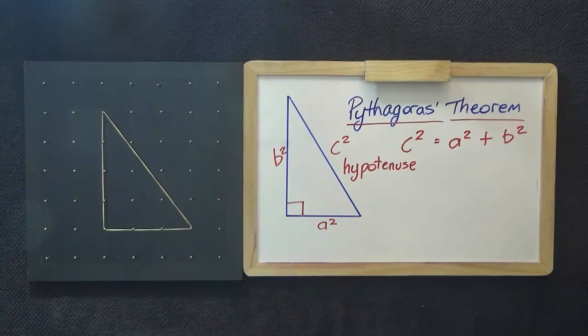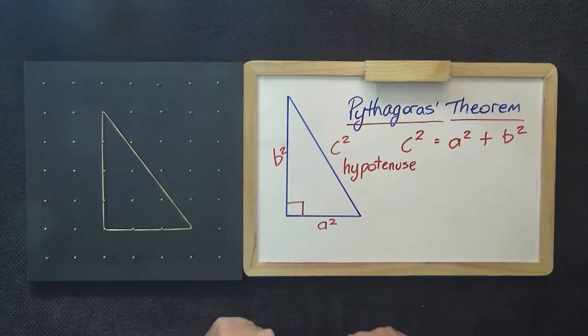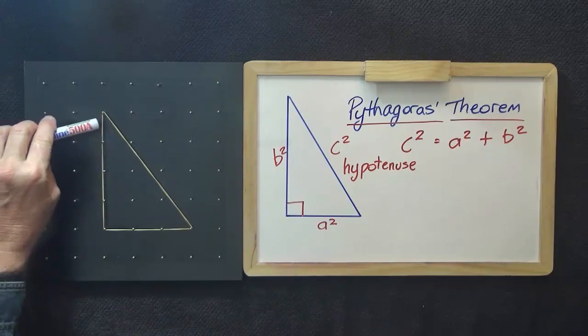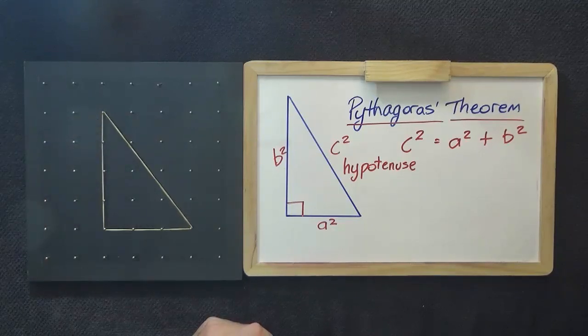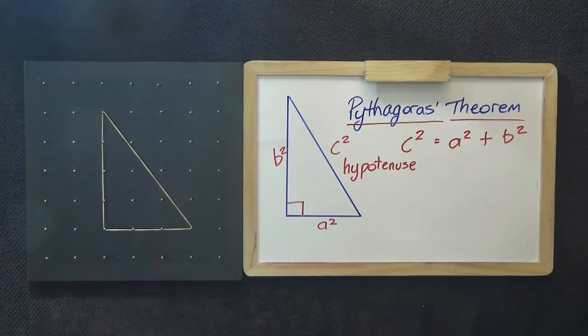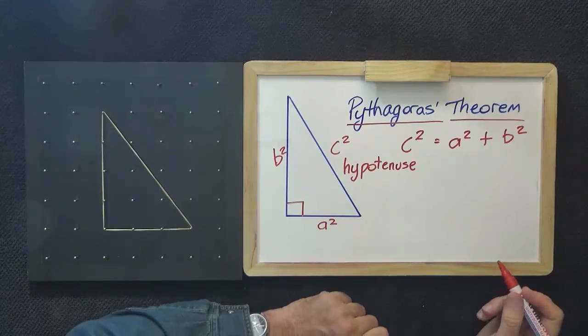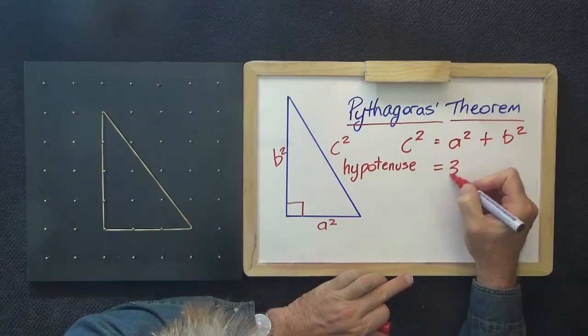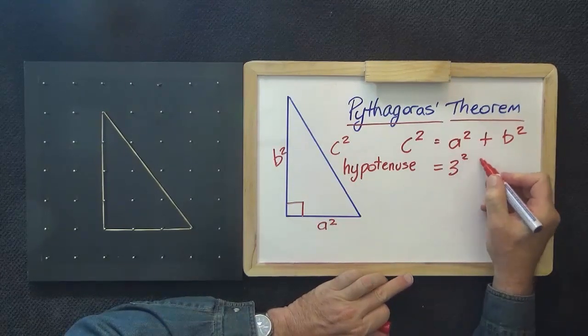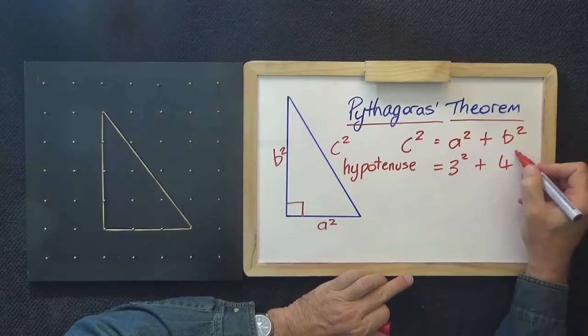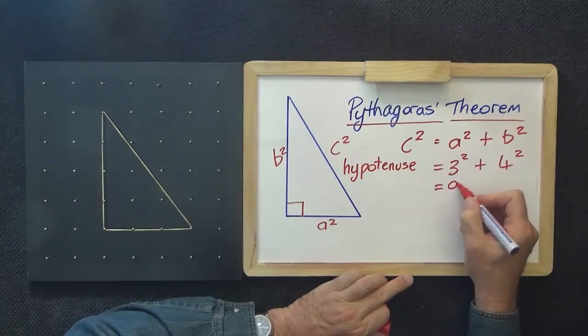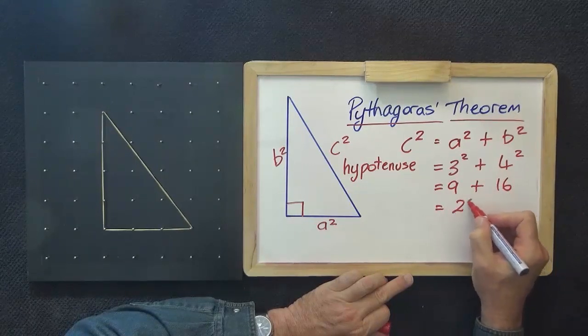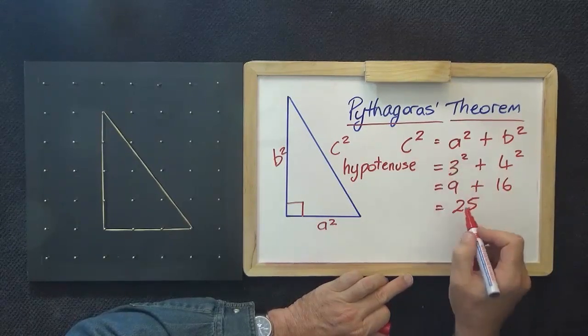I have an example here on the geoboard, and you'll see it's 1, 2, 3, 4 high and 3 along the base. So that would be 3 squared plus 4 squared equals 9 plus 16 equals 25. So C squared equals 25.